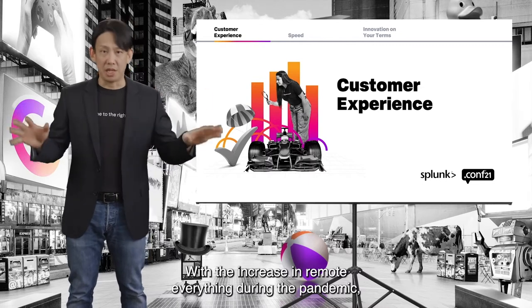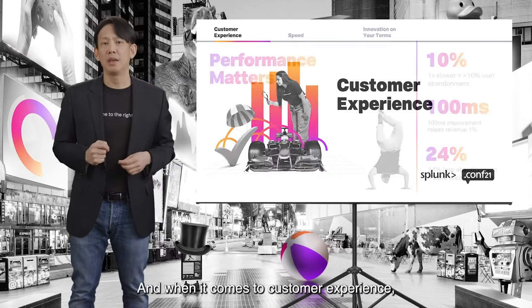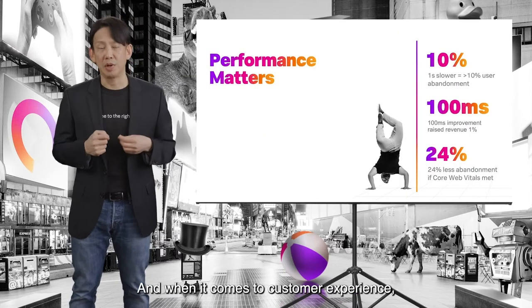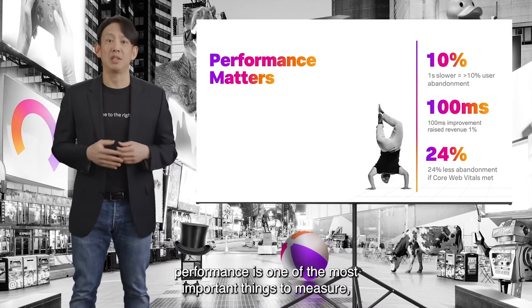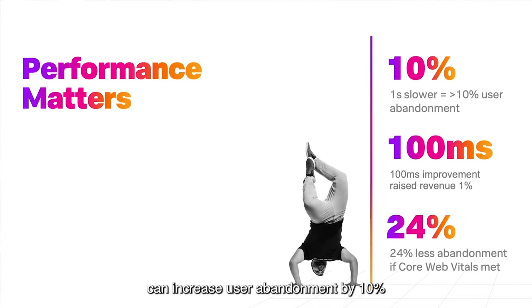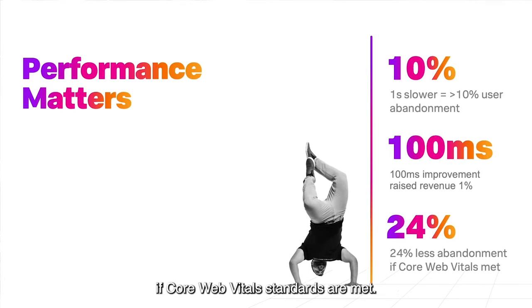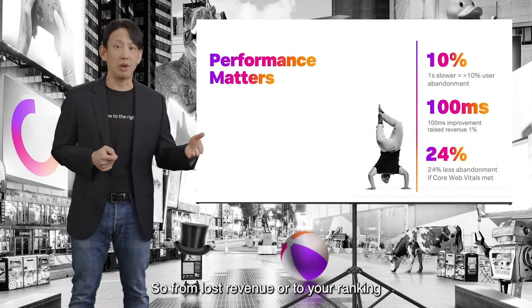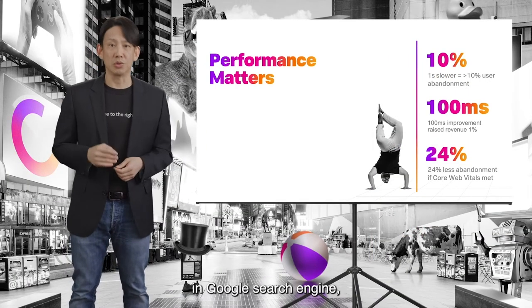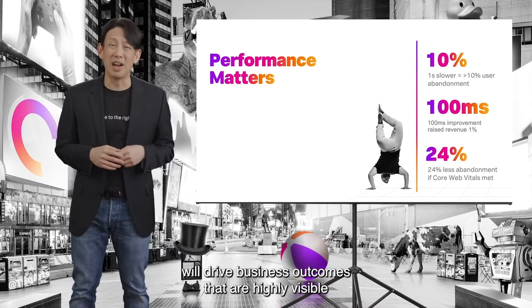With the increase in remote everything during the pandemic, delivering a great digital experience matters more than ever before. Performance is one of the most important things to measure. Studies have shown that being just one second slower can increase user abandonment by 10%, and even a 100-millisecond improvement can improve revenue by 1%. Furthermore, you get 24% less abandonment if Core Web Vital standards are met.